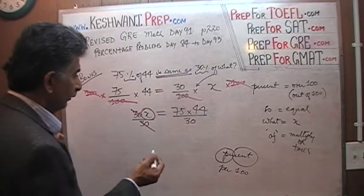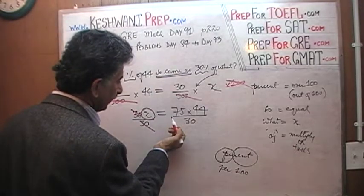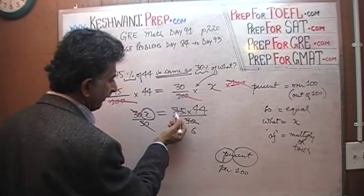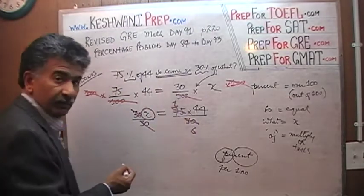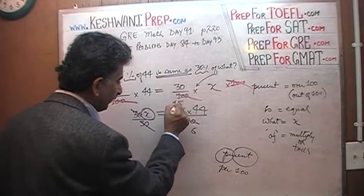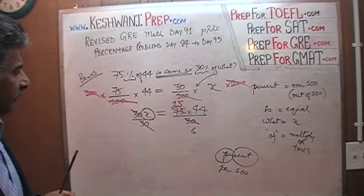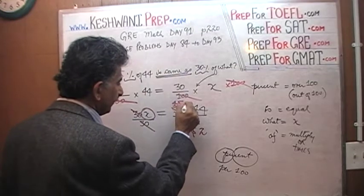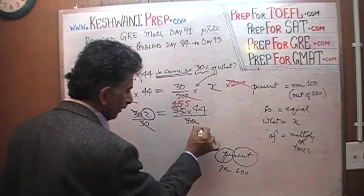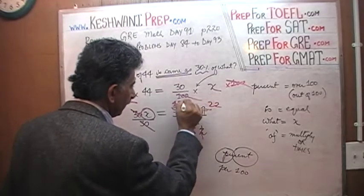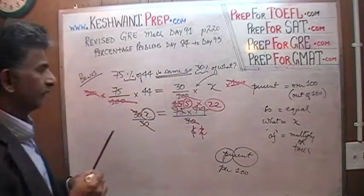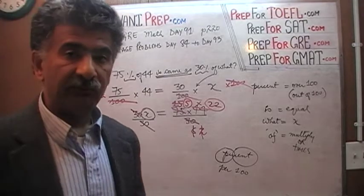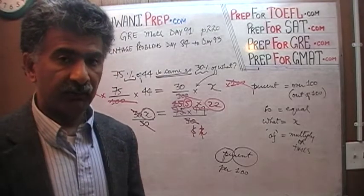Now all we have to do is simplify. Let's divide by 5: there are six 5s in 30, and fifteen 5s in 75. Then divide by 3: six divided by three is two, and fifteen divided by three is five. One more round with 44 — divide into 44, we end up with 22. So we end up with 5 times 22. Five times 20 is 100, and two times five is 10, so it's 110. X equals 110.